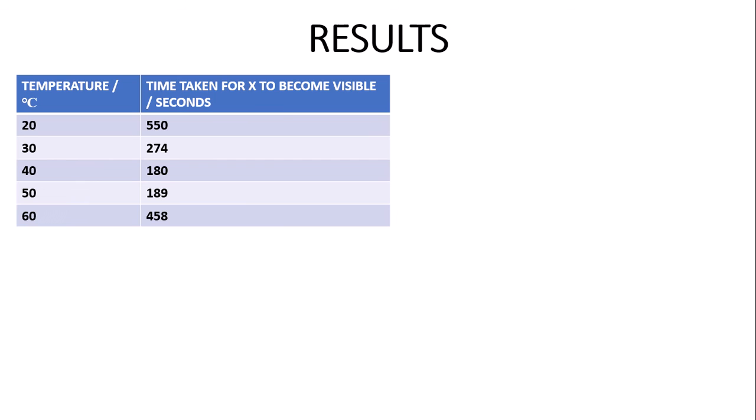Now for the expected results. You need to repeat the experiment at different temperatures — I have used 20, 30, 40, 50, and 60 degrees Celsius — and it is advisable to do each temperature three times to get a mean average rate of reaction to make your results more reliable. The time taken for the X to become visible in seconds was: 20°C = 550, 30°C = 274, 40°C = 180, 50°C = 189, 60°C = 458.